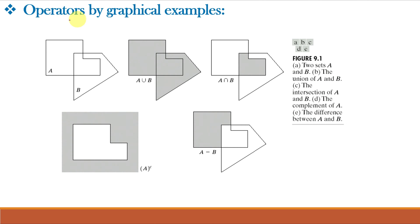Let us understand operators by graphical examples. Say there are two sets A and B. Then the union of A and B will be the shaded portion — the combination of A as well as B, all elements of A and B. The intersection of A and B is where A and B overlap, so that portion is shaded.